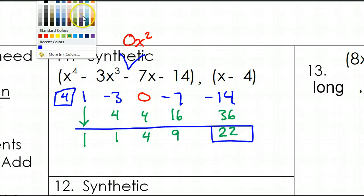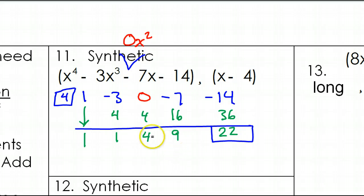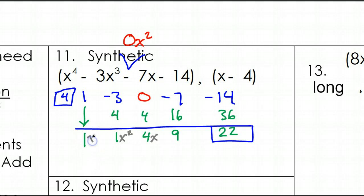Remember, if I wanted to put the variables back in, it would be like this. Ignore the remainder for a minute. This 9 is going to be the constant. If I go one more over to the left, this will be my x term. And this is going to be my x squared term. And this will be x to the third power.